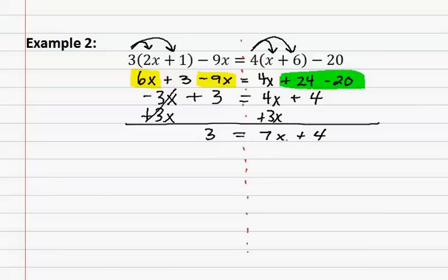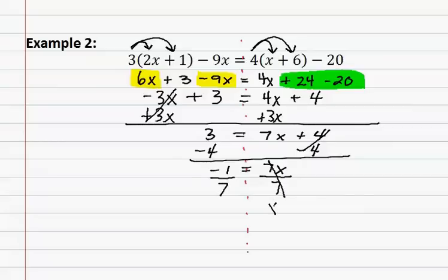You start by doing order of operations backwards at this point by subtracting 4 from both sides. You then get 7x equals negative 1. Now, I have something being multiplied by x and the only way to get rid of it is to do the opposite and divide. 7 divided by 7 is 1, and 1x can be written as just x equals negative 1 seventh.